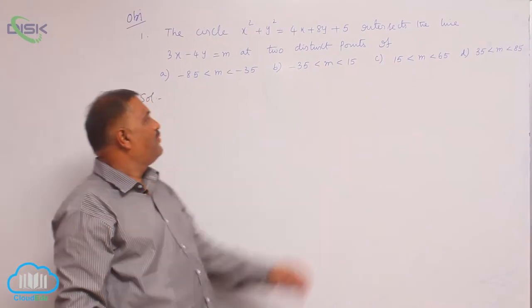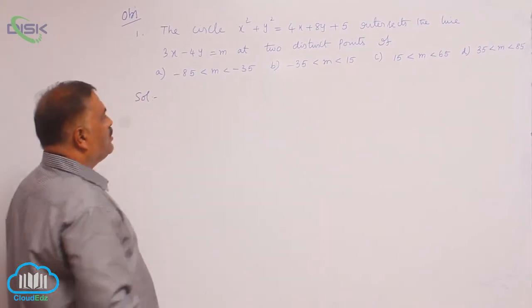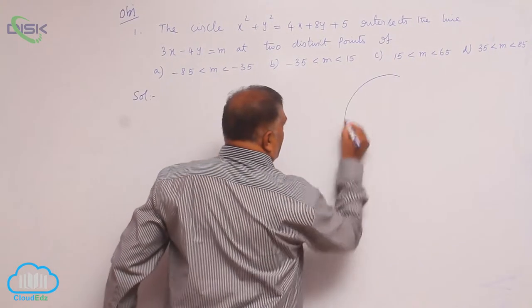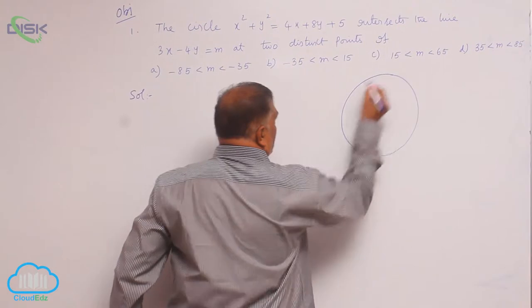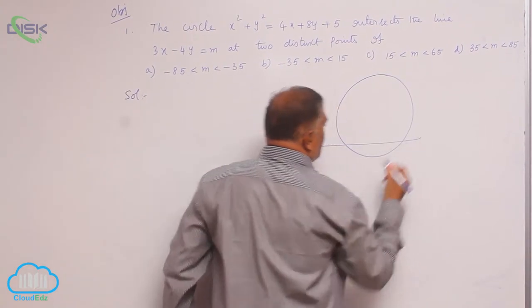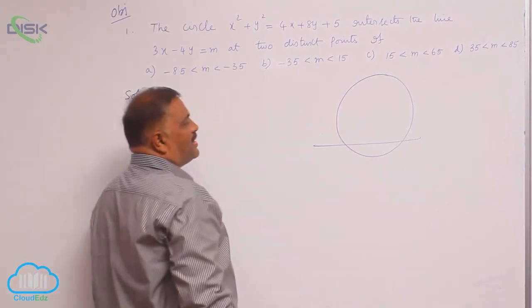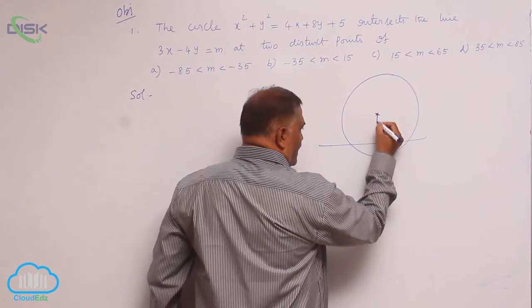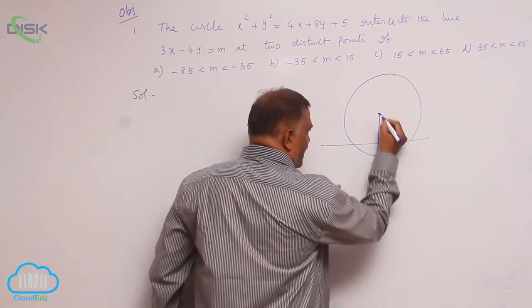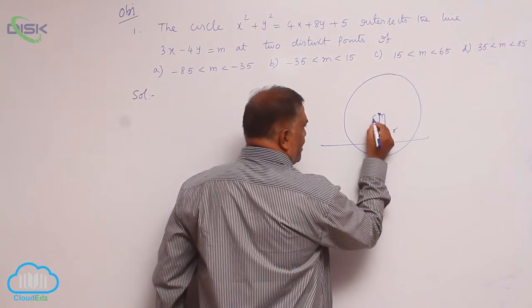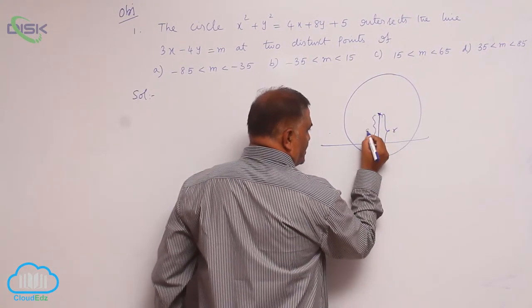You are given very clearly that the circle is intersected by the line. So, it is very clear that this is the radius and this is the perpendicular distance.